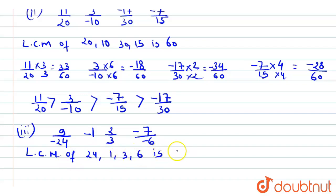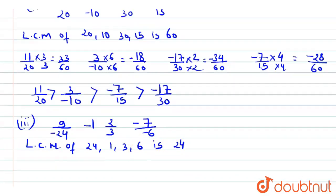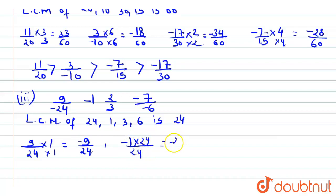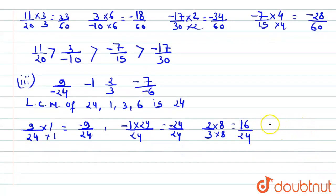Converting all to denominator 24: 9/(-24) = -9/24; -1 = -24/24; 2/(-3) × 8 = -16/24; and -7/(-6) × 4 = 28/24. Now all fractions have the same denominator and can be compared.